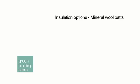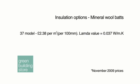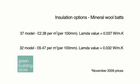For example, with the mineral wool batts, we have a choice of the cheaper £2.38 per square metre per 100mm — the 0.037 lambda value — against the £6.47 per metre square per 100mm option, the 0.032. There's also one in between at 0.034. It makes a big difference in both cost and performance.